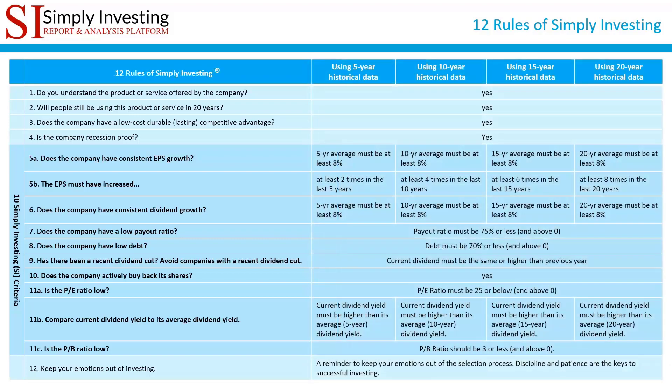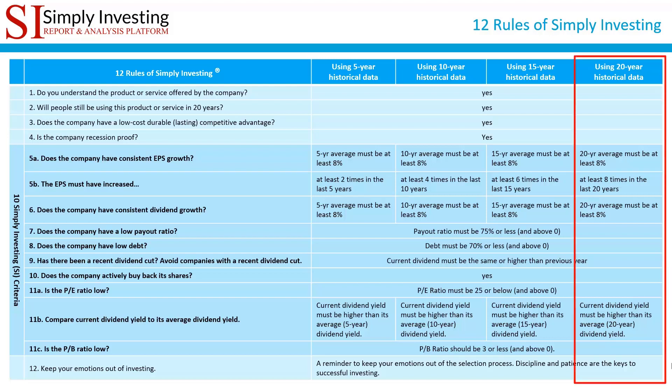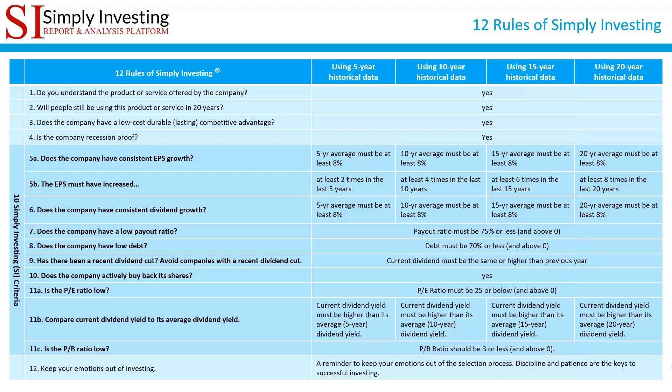In addition, the platform will also provide you with the SI criteria grade using the 5-year, 10-year, 15-year, and 20-year historical data for each stock. I always recommend using the 20-year historical data, but for those that want to consider short-term trends, the platform provides you with that data as well. In a few minutes you'll see all this in action when I demonstrate the Simply Investing platform.